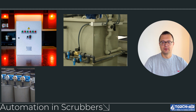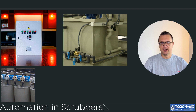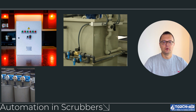Hello everyone, Michael Klepek here. Today we're going to dive into the importance of automation in scrubbers. In modern gas cleaning systems, automation is key to maintaining high efficiency while minimizing manual intervention. From automatic solution supply to liquid level control and pH metering, these automated systems optimize the scrubber's operation and help avoid potential breakdowns. Let's take a look at how automation works in scrubbers and the key systems involved.